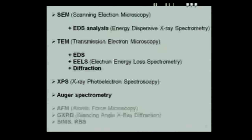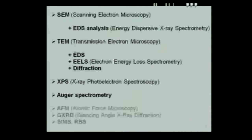You can also determine composition using glancing angle X-ray diffraction, and you have ion mass spectrometry and RBS — Rutherford backscattering spectrometry — which are used to analyze the composition of a surface.